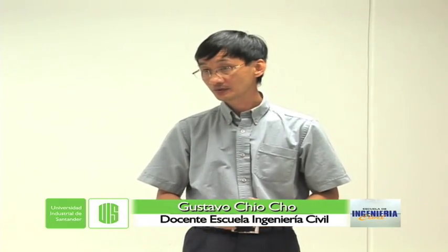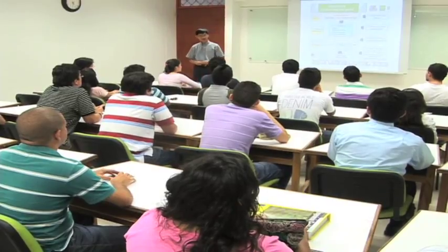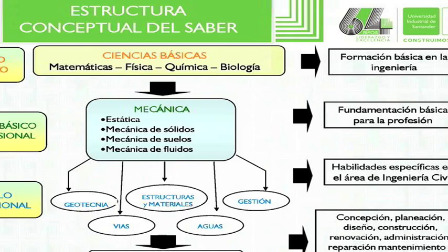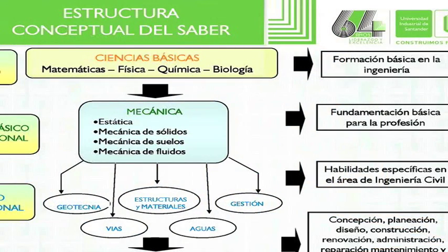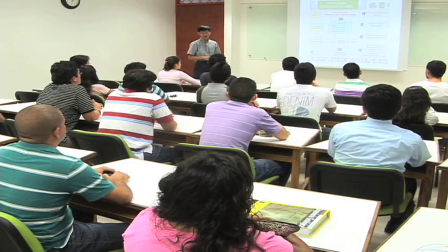La estructura del programa de ingeniería civil tiene tres secciones donde el estudiante completa su formación: el ciclo básico, el ciclo básico profesional y el ciclo profesional. En el ciclo básico, el estudiante busca una formación básica en ingeniería en las áreas de matemáticas, física, química y biología. Posteriormente, con estas bases, adquiere fundamentación en la parte básica profesional con asignaturas de estática, mecánica de sólidos, mecánica de suelos y mecánica de fluidos.